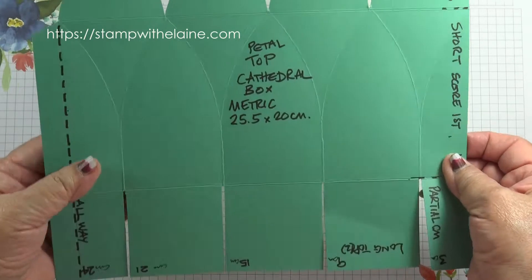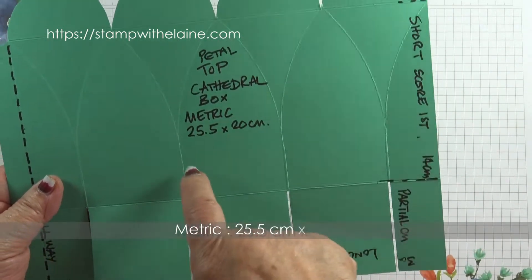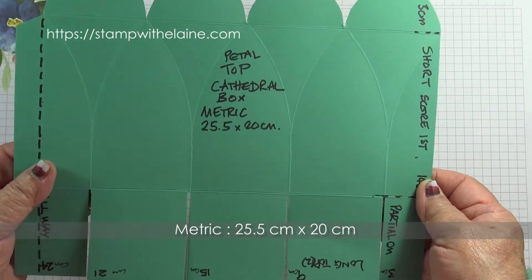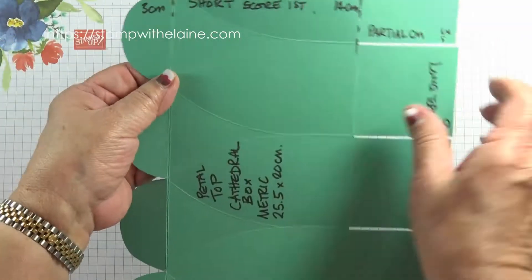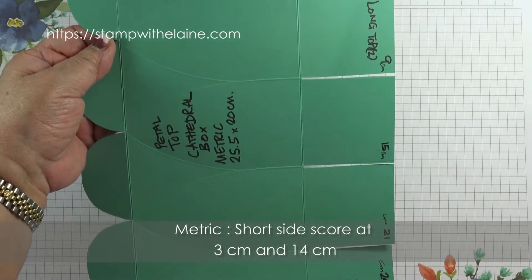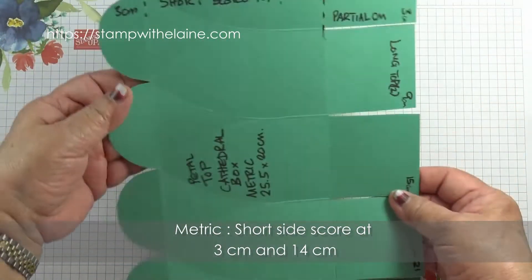In metric this will work out slightly smaller. So your cardstock will be 25.5 by 20 centimeters. Your first score line is at three centimeters and your second is at 14 centimeters on the short side.